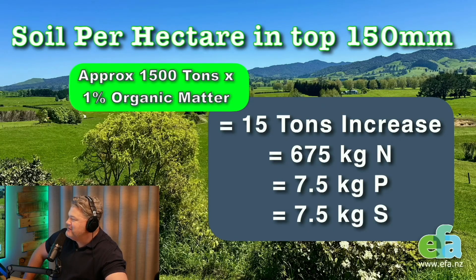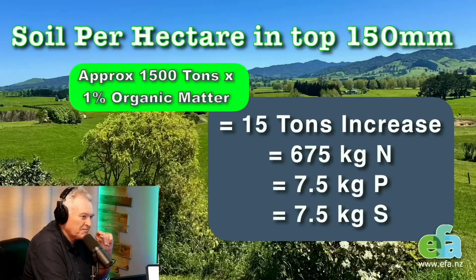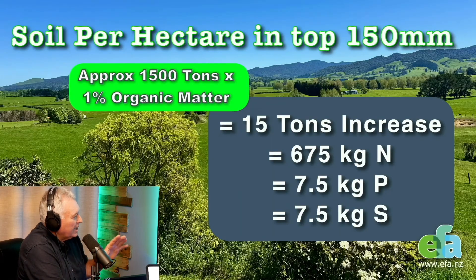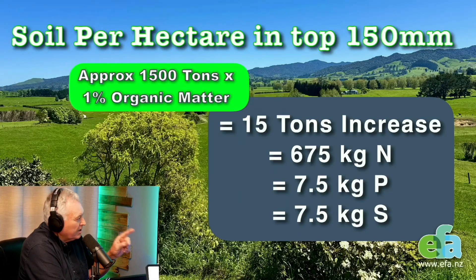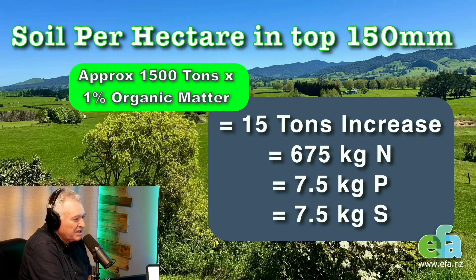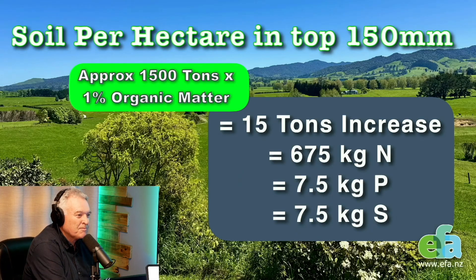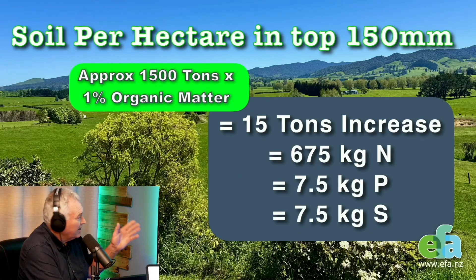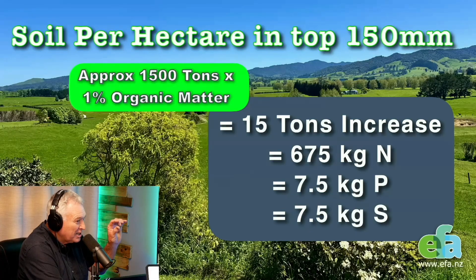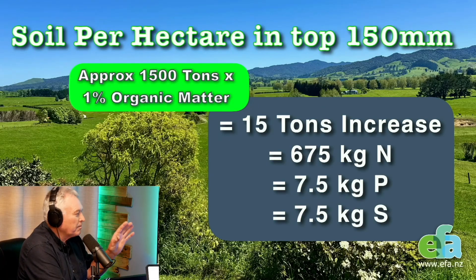Holy heck, that's amazing. A 1% organic matter increase lifts your soil weight by 15 tons. When you calculate the numbers, you've just put in 675 kilograms of nitrogen — that's about 1.3 tons of urea. Amazing. It doesn't have to go much and there are some massive changes.